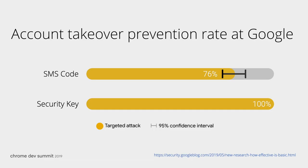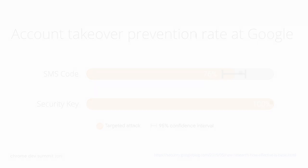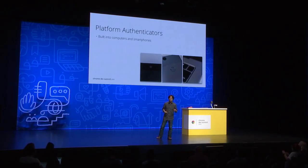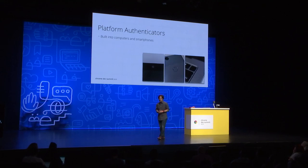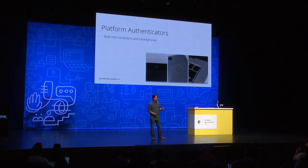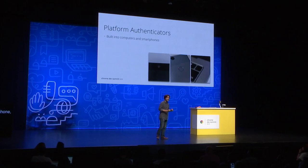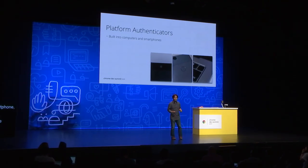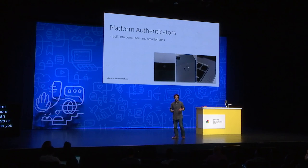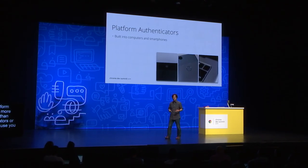So how effective are second factors? Here's a comparison between SMS OTP as a second factor and security key as a second factor. SMS OTP is not perfect against targeted attacks, while security key protects users completely. Platform authenticators are more consumer-friendly than roaming authenticators or security keys, because you don't have to purchase a separate device, you don't have to worry about carrying it around, and they are a part of the device you use every day.